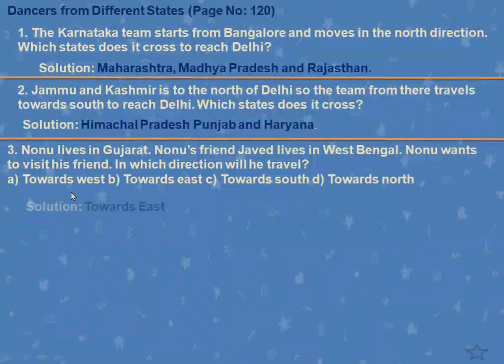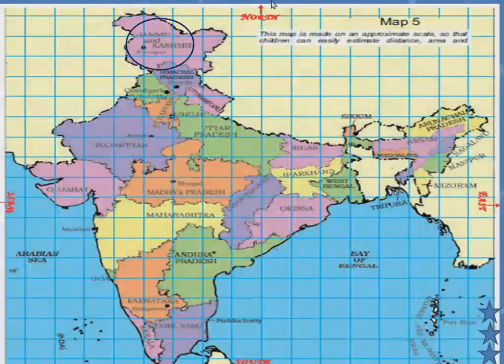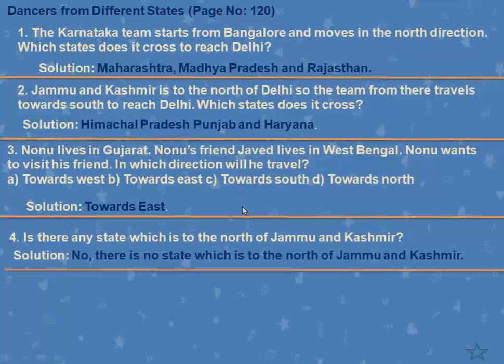Next question: Is there any state which is to the north of Jammu and Kashmir? This is Jammu and Kashmir, and north of Jammu and Kashmir means this side. Can we find any Indian state here? No, we cannot find any Indian state here.